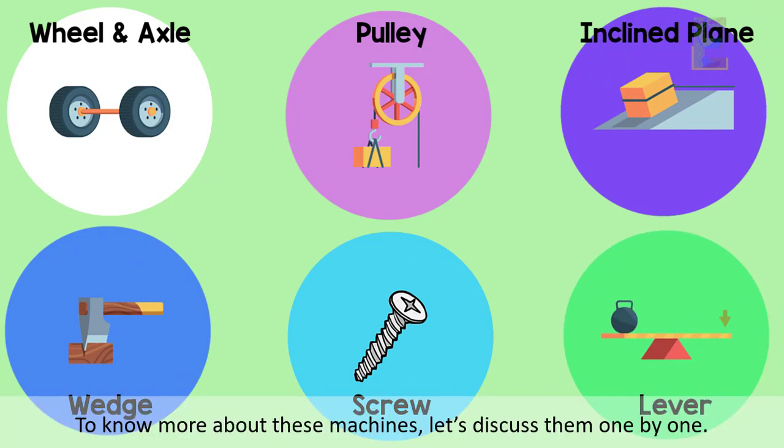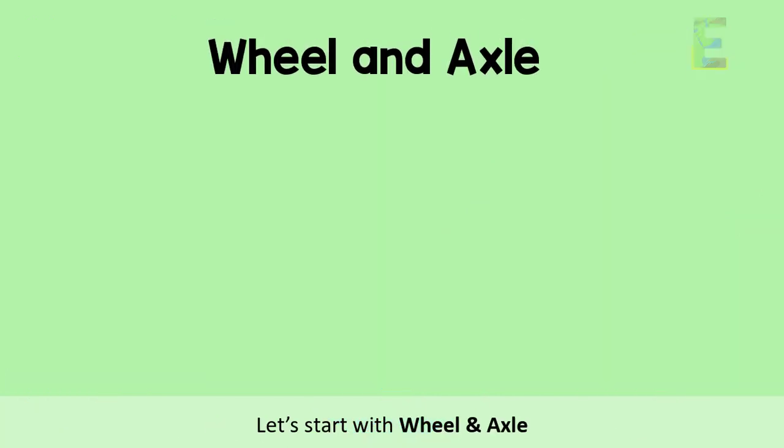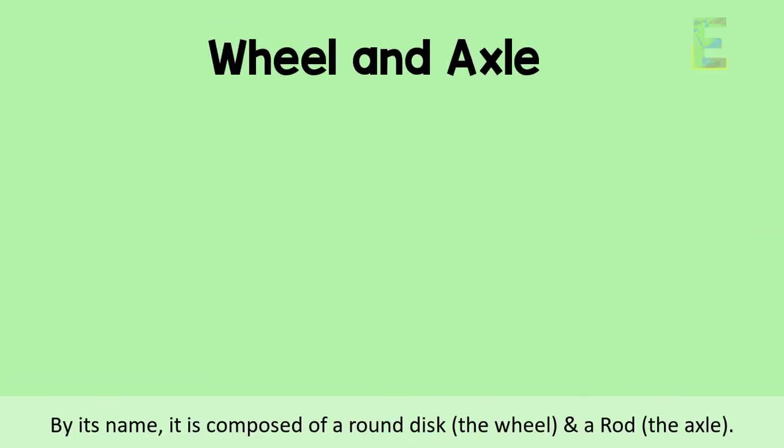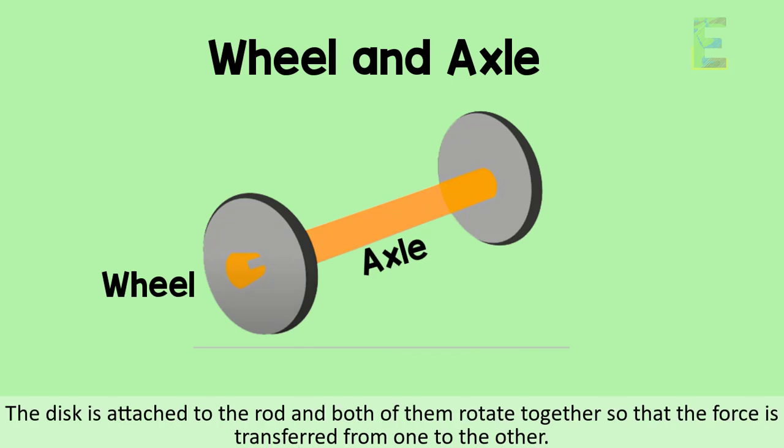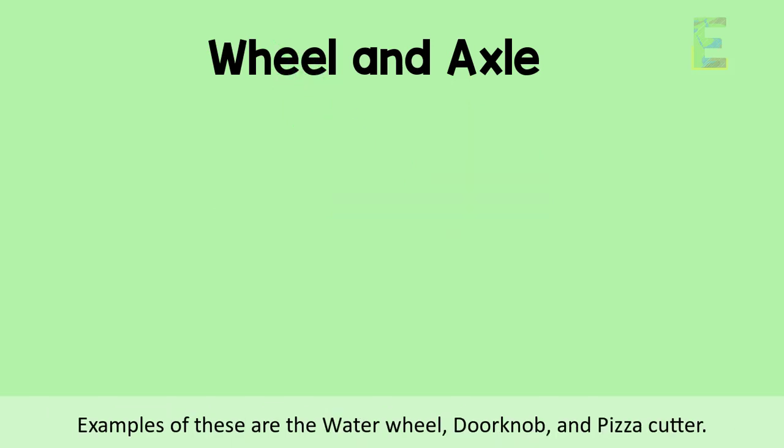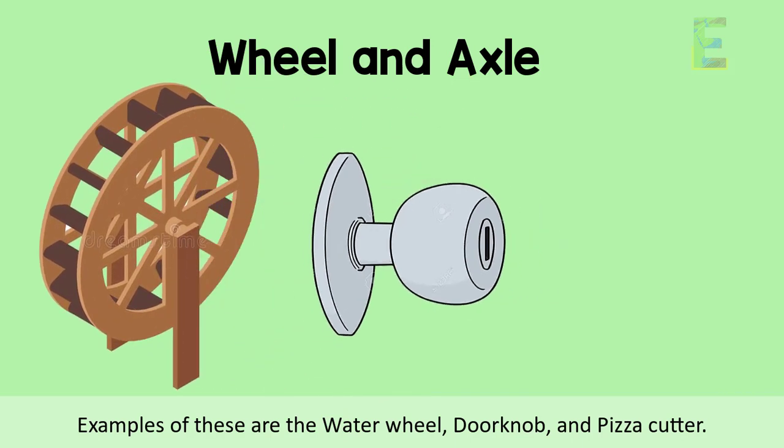Let's start with wheel and axle. By its name, it is composed of a round disc or the wheel and a rod or the axle. The disc is attached to the rod and both of them rotate together so that the force is transferred from one to the other. Examples of this are the water wheel, door knob, and pizza cutter.